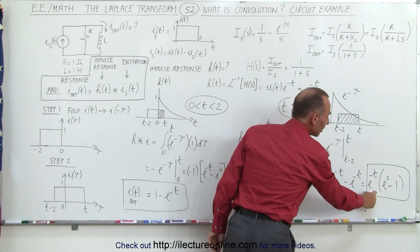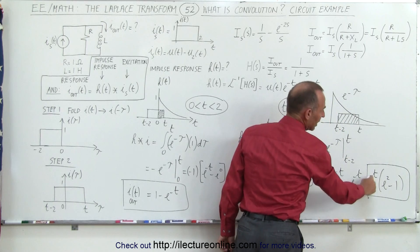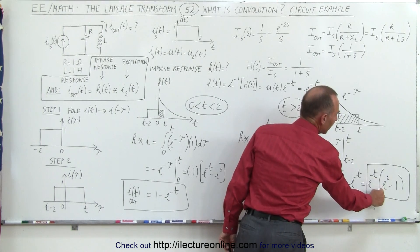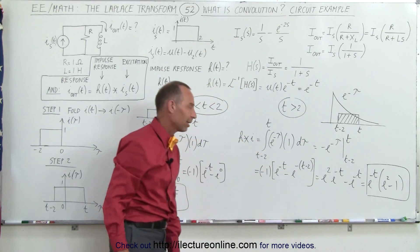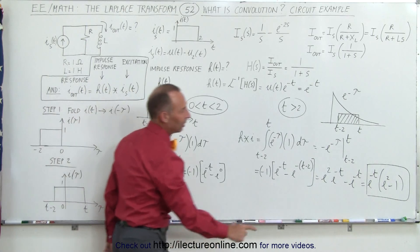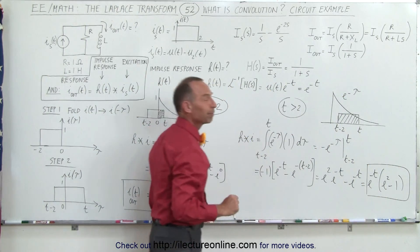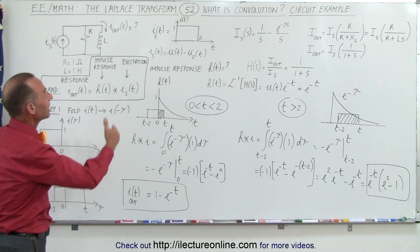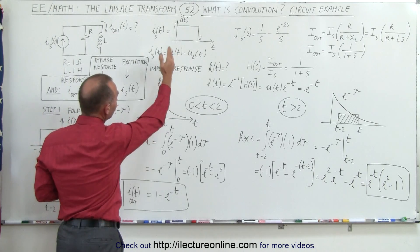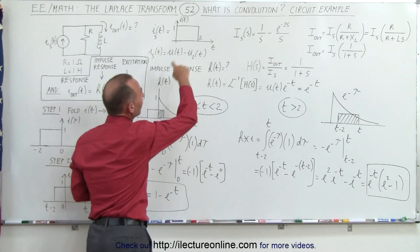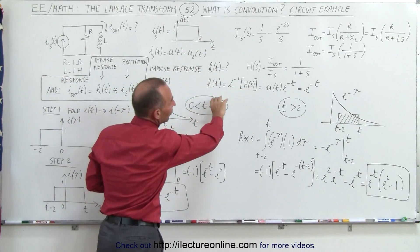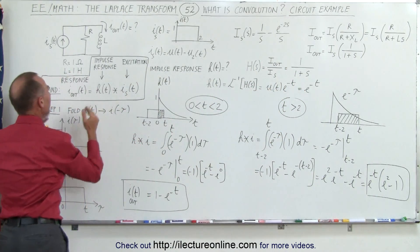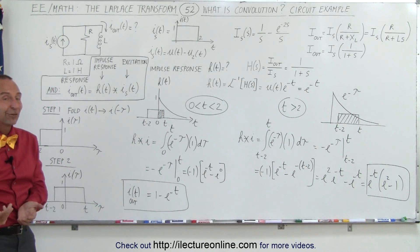So this is the current through the inductor from 0 to 2 seconds, and this is the current from 2 seconds onward. That's how convolution nicely defines how a circuit works: find the impulse response by converting to the frequency domain, define H(s) as output current over input current, take the inverse Laplace transform to get h(t), then perform the convolution to find the circuit's current response.